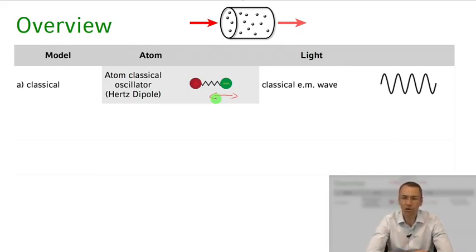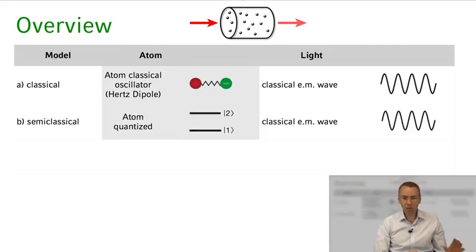That's one model we can use, and in that case we would have the atom based on a classical description. This is a purely classical model and the electromagnetic wave would also be just a classical electromagnetic wave that you all know from your electrodynamics course. This is not something we want to discuss here, but this would be a simple starting point.